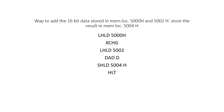As the question says, the result has to be stored from 5004. The result which is in HL can be shifted to 5004 and 5005 by using the instruction SHLD 5004. With this, the result is stored in 5004 and 5005.